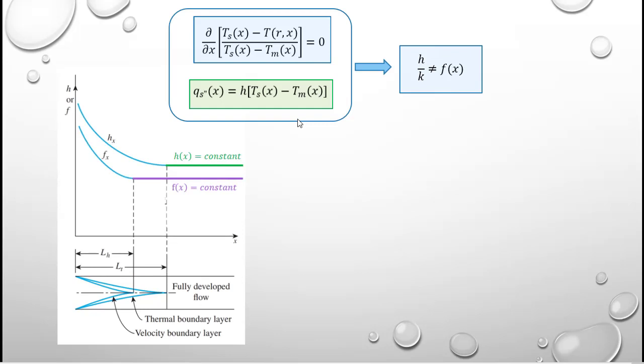Once the velocity boundary layer becomes established and fully developed, we find that the friction coefficient also becomes constant. Once the thermal boundary layer becomes fully developed, we then find that the heat transfer coefficient is also a constant.